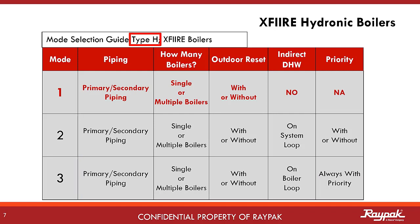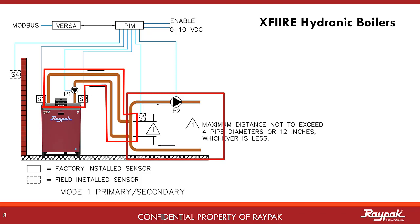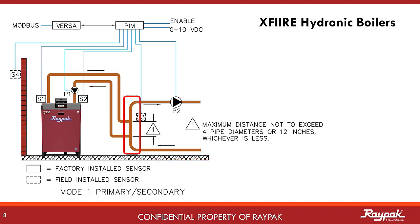First, we will present Mode 1. Primary-secondary plumbing is required — this is the most common configuration with hydronic type boilers. Here is a drawing for Mode 1 primary-secondary with a single boiler. It is primary-secondary because there are two loops: the boiler loop and the system loop. The place where the two loops overlap is the decoupler. It is in Mode 1 because of what is not here — there is no indirect domestic hot water system present.